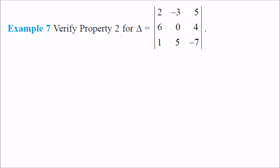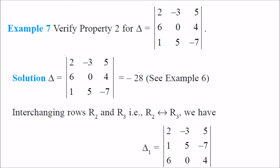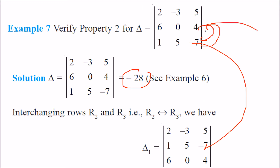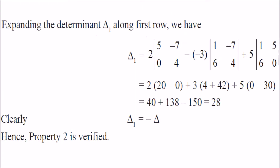Let us verify this property. First, solve the determinant — as we have already done, this is minus 28. When we interchange rows 2 and 3, the second row comes to the third position and the third row takes the second position. When we take the determinant, it equals 28, which is the negative of minus 28.